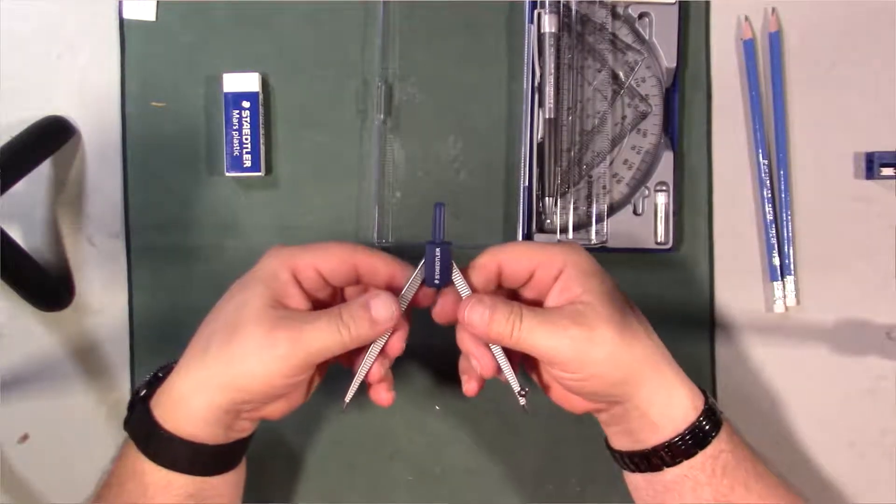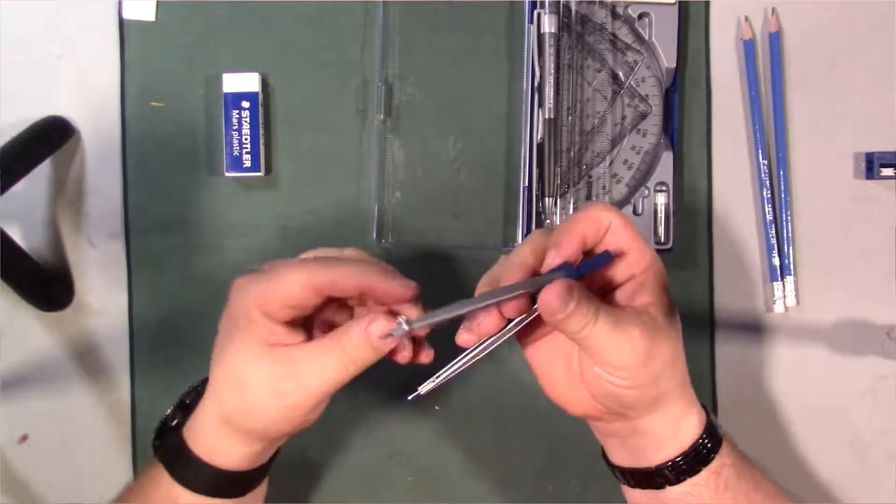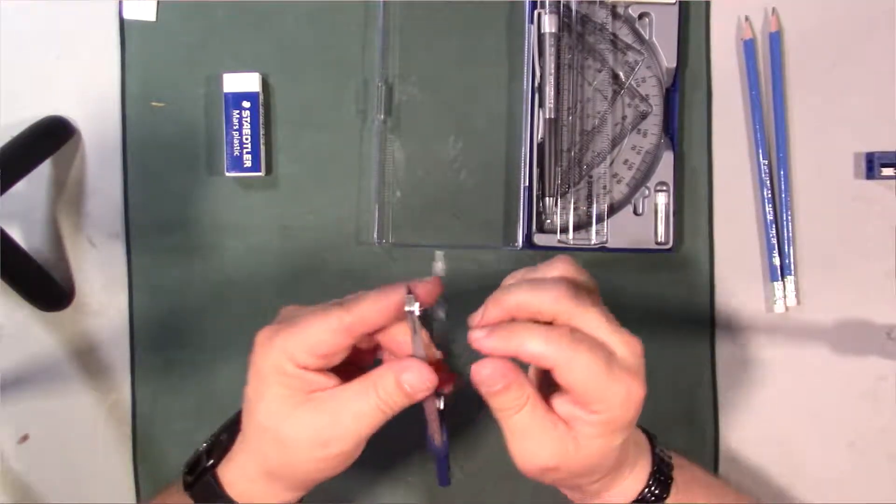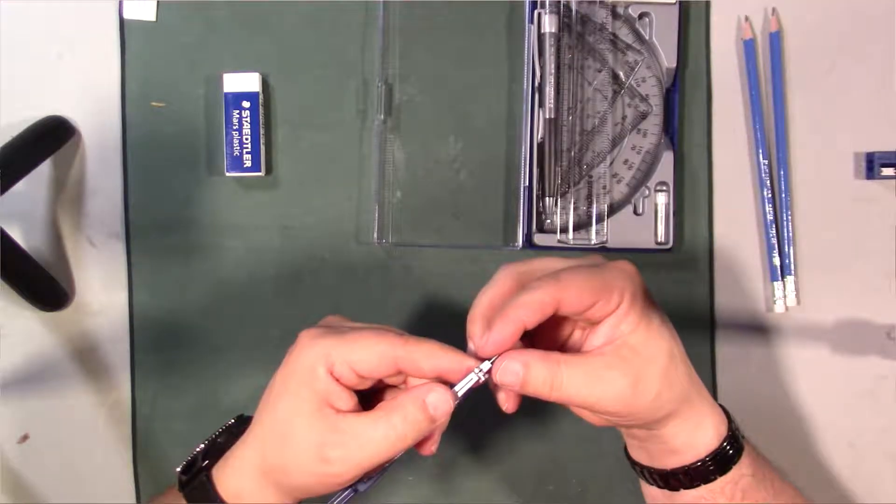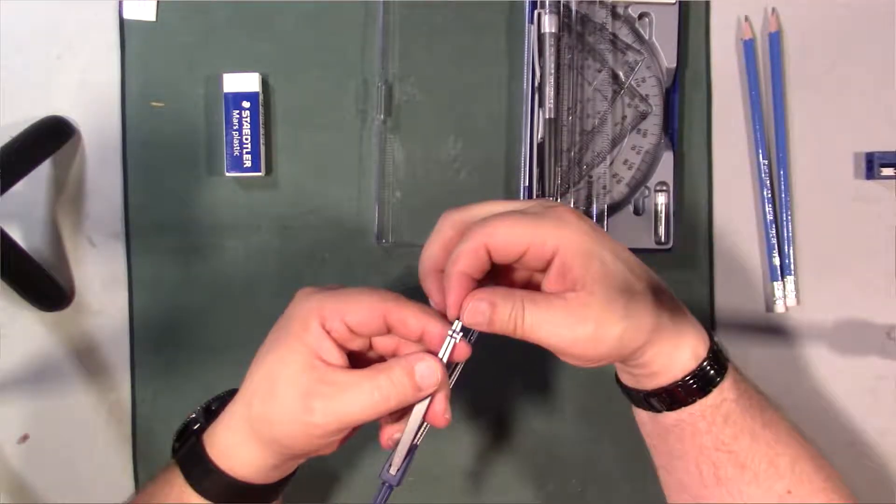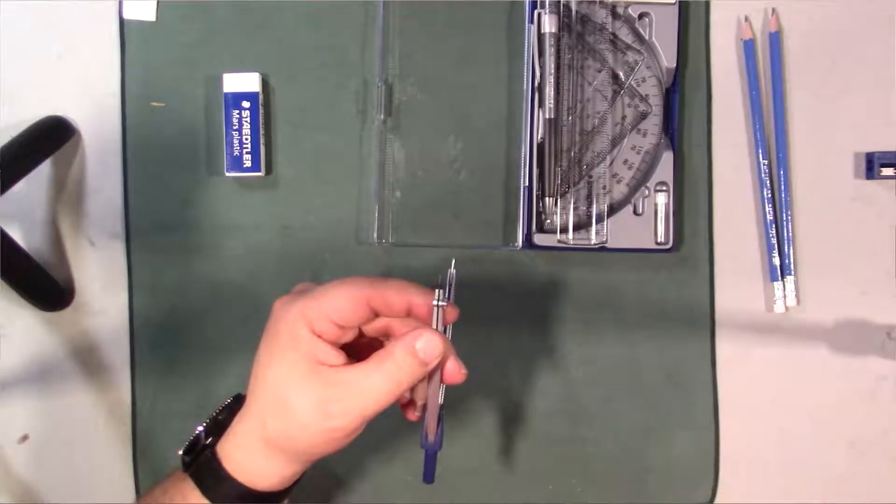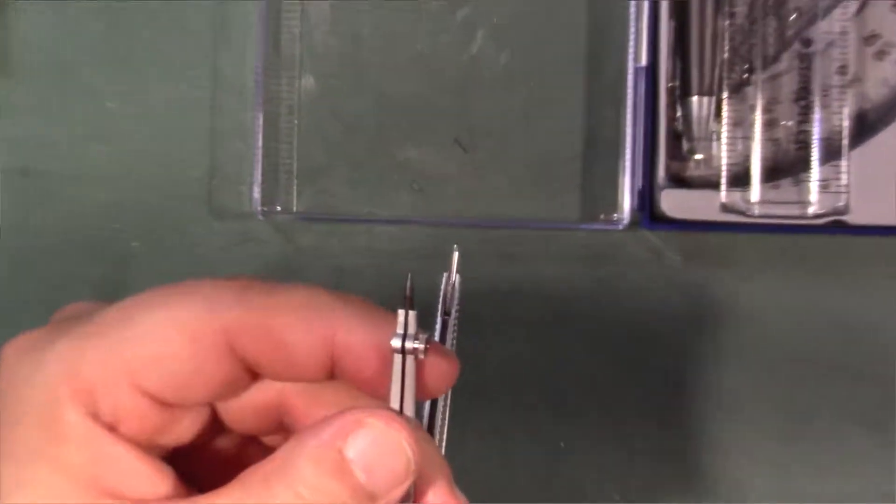So the compass feels like it's made out of aluminum, this is plastic up here. Okay, so this is kind of resistant. And of course you got the lead here, so I'm assuming that you loosen this off, the lead actually... Okay.